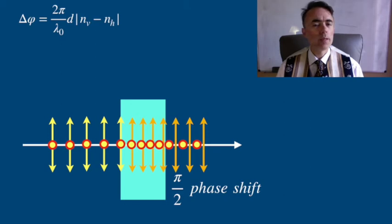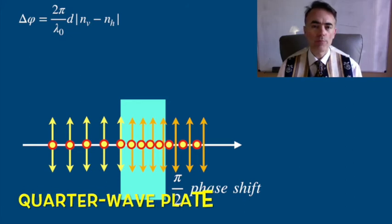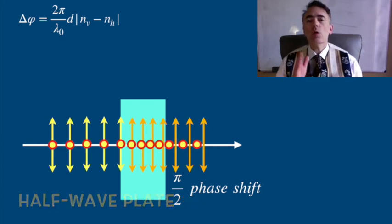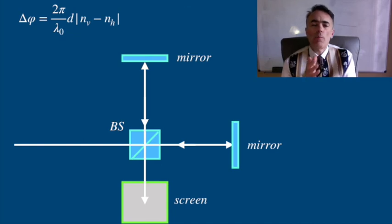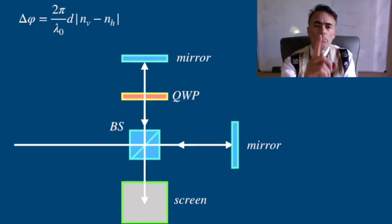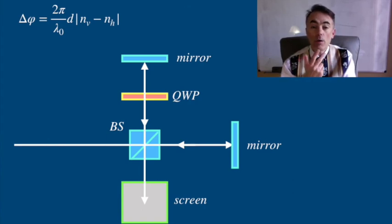You can play with the thickness of the birefringent material to obtain the phase difference that you want at the output. If delta phi is π over 2 we have a quarter wave plate. If delta phi is π we have a half wave plate. If you put a quarter wave plate in one arm of a Michelson interferometer, the light in the arm will be π phase shifted in comparison with the light in the other arm.